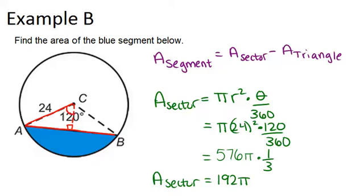If I draw in the height, I've actually created two congruent triangles, which have angles of 60 degrees up here. Because this is a right angle, it means it's actually a 30-60-90 special right triangle. So, I can use the pattern of 30-60-90 triangles to help me.